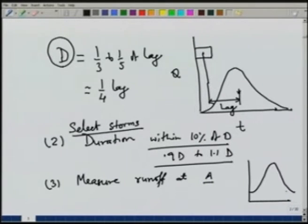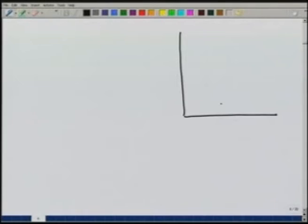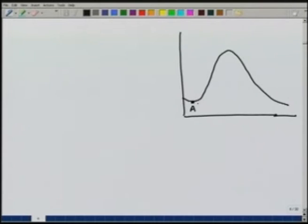Once we get the stream flow, we use various methods of separating the base flow to get the direct runoff hydrograph. There is also an empirical method to locate the end of the direct runoff. If this is the total runoff, the starting point A is easy to see — it is where the hydrograph starts rising. The ending point D is estimated by an empirical relation: from the peak, the point D has a distance of N days.